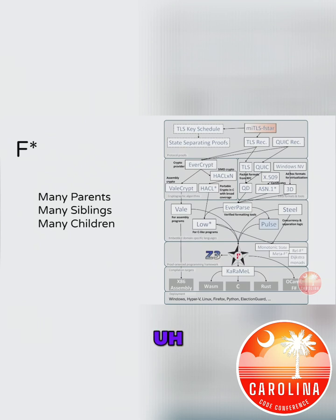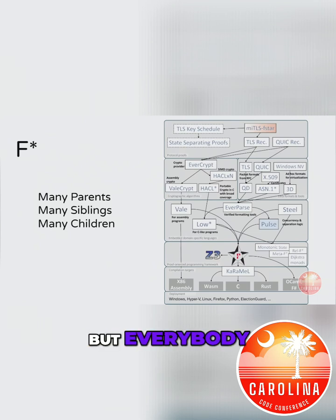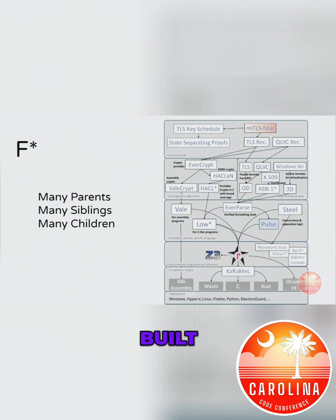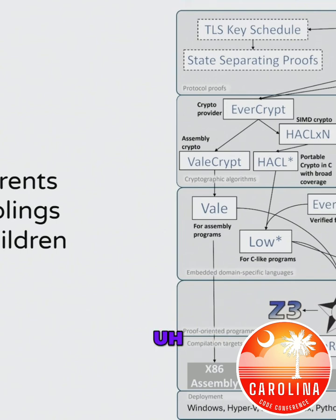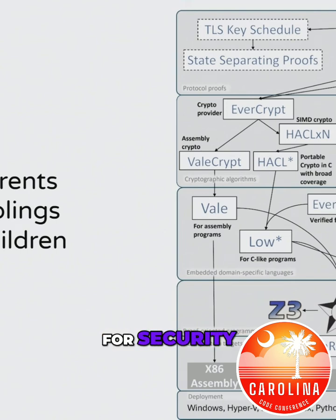Many of you don't know what F-star is, but everybody has used technology that F-star has built — because it's been used for TLS 1.3 and 1.2, and a lot of the proofs for the QUIC protocol and security around that. There's a ton of other stuff, and that's why this really busy diagram that looks like spaghetti is there.